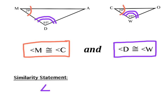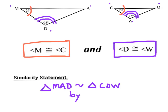I can say that triangle MAD is similar to triangle COW — making sure to go in the same corresponding order: M, A, D corresponds to C, O, W. And there's my similarity statement. I also want to state that these are similar by the Angle-Angle rule.